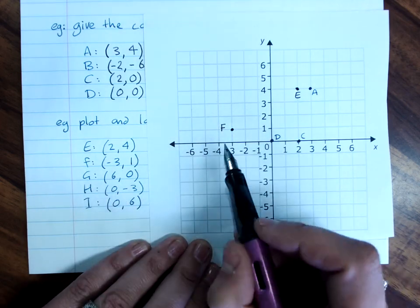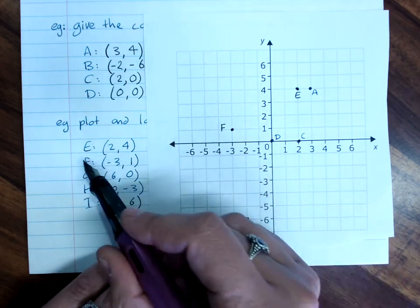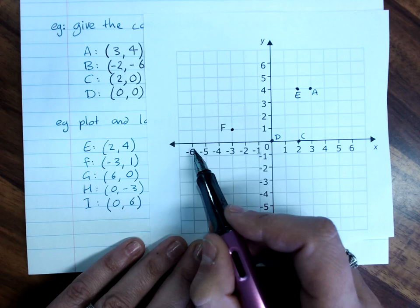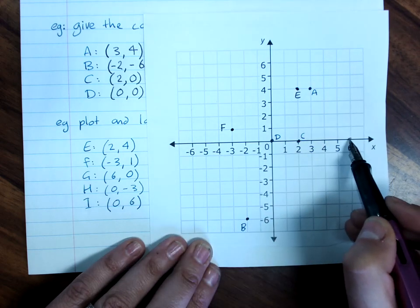So if I'm asked to label a point, and it's got a letter with it, that's what I do. I put the letter with it. G is at six, zero. Six on the x-axis, and zero on the y means we just stay there.